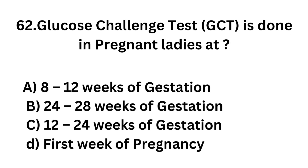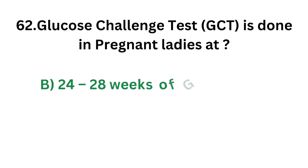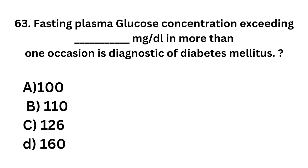Question number 62. Glucose challenge test (GCT) is done in pregnant ladies at: Option A - 8–12 weeks of gestation; Option B - 24–28 weeks of gestation; Option C - 12–24 weeks of gestation; Option D - First week of pregnancy. The correct answer is Option B, 24–28 weeks of gestation. Glucose challenge test is done in pregnant ladies at 24–28 weeks of gestation.